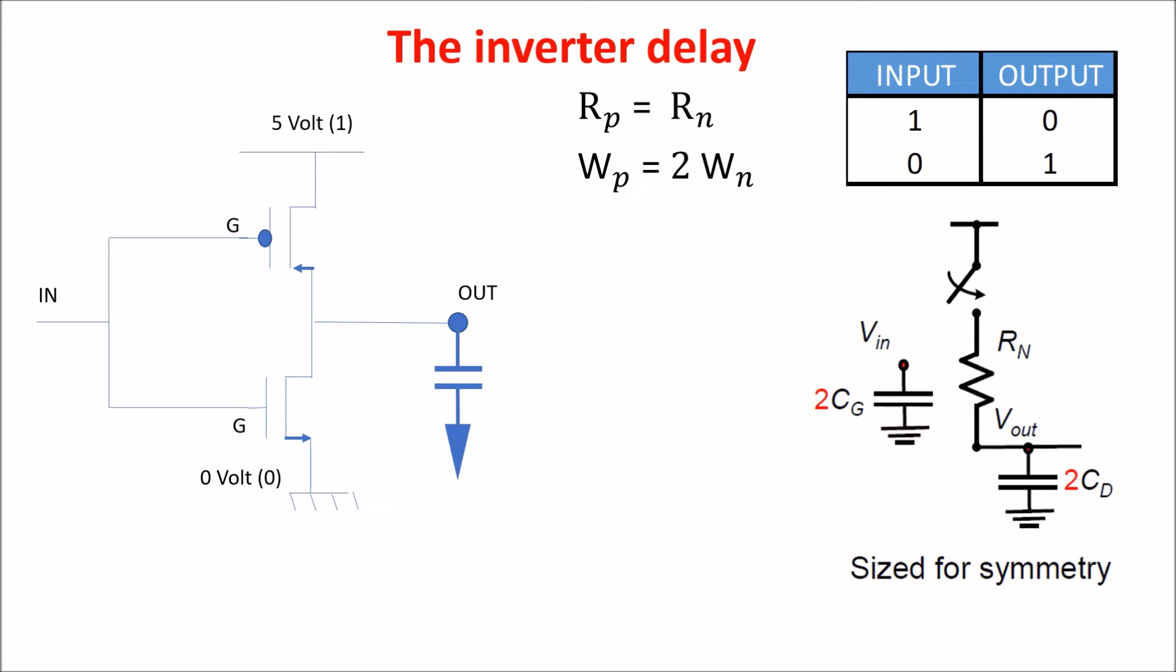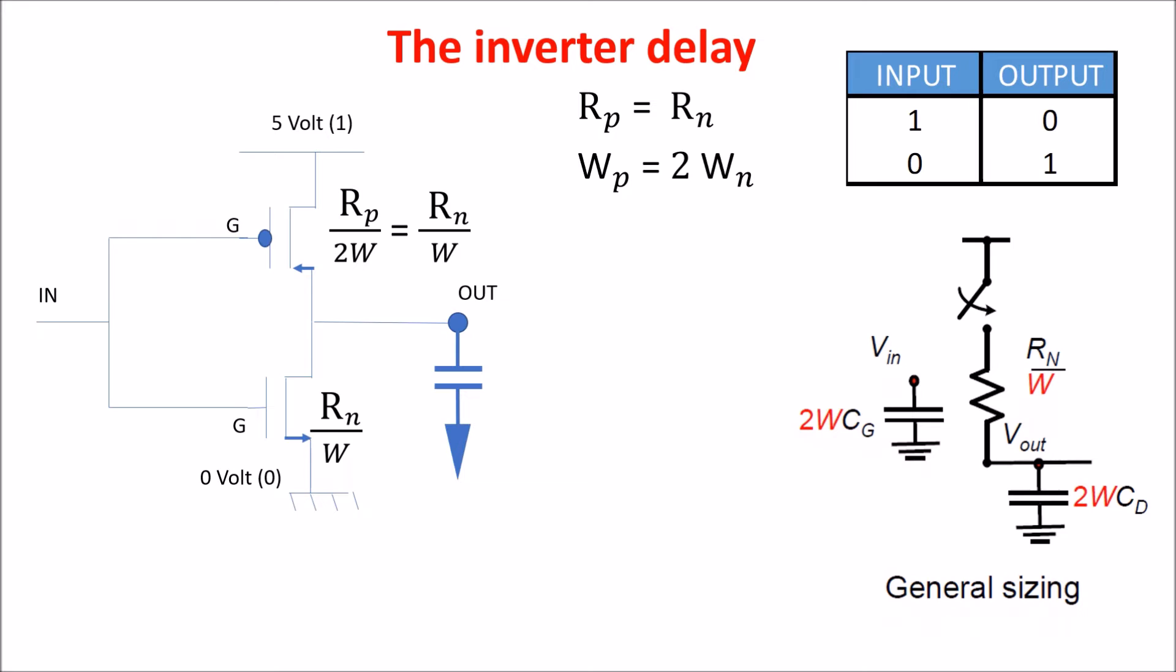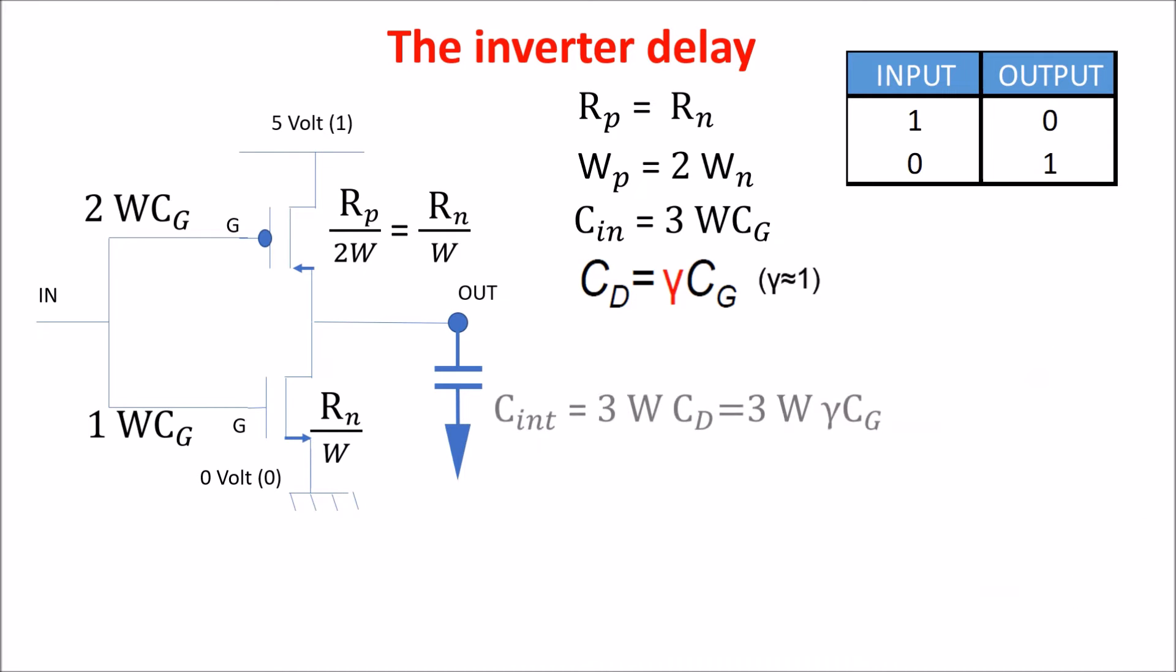If we want to write the resistance per unit, we can imagine to extend all our width of W. But doubling the width affects also the capacitance, so the capacitance in input becomes this. 2WCgate from the PMOS and 1WCgate from the NMOS. The capacitance of the drain is related to that of the gate by the process from this relation. So, the intrinsic capacitance of the output is this, because we see a double width in the PMOS plus the Cdrain of the NMOS. And the intrinsic delay of the inverter is this one.